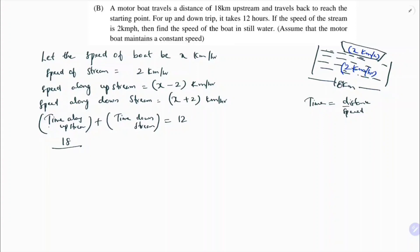Time upstream is 18 divided by (x minus 2), and time downstream is 18 divided by (x plus 2). So the equation is: 18/(x − 2) + 18/(x + 2) = 12.